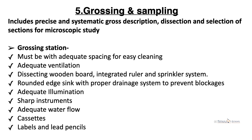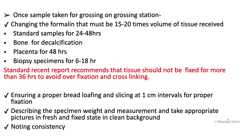After specimen receiving, we take the sample for grossing. Grossing and sampling include precise and systematic gross description, dissection, and selection of sections for microscopic study. We measure the specimen, observe for discoloration or nodularity, and give a section at the grossing station. The grossing station must have adequate spacing, ventilation, a dissecting wooden board, integrated ruler, sprinkler system, adequate illumination, sharp instruments, adequate water flow, and cassettes, labels, and lead pencils.